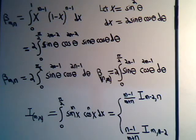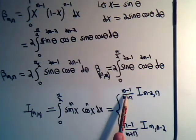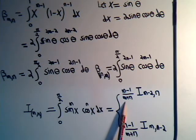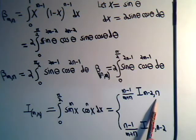One is simply M minus 1 divided by M plus N times the new integral of I(M minus 2, N).